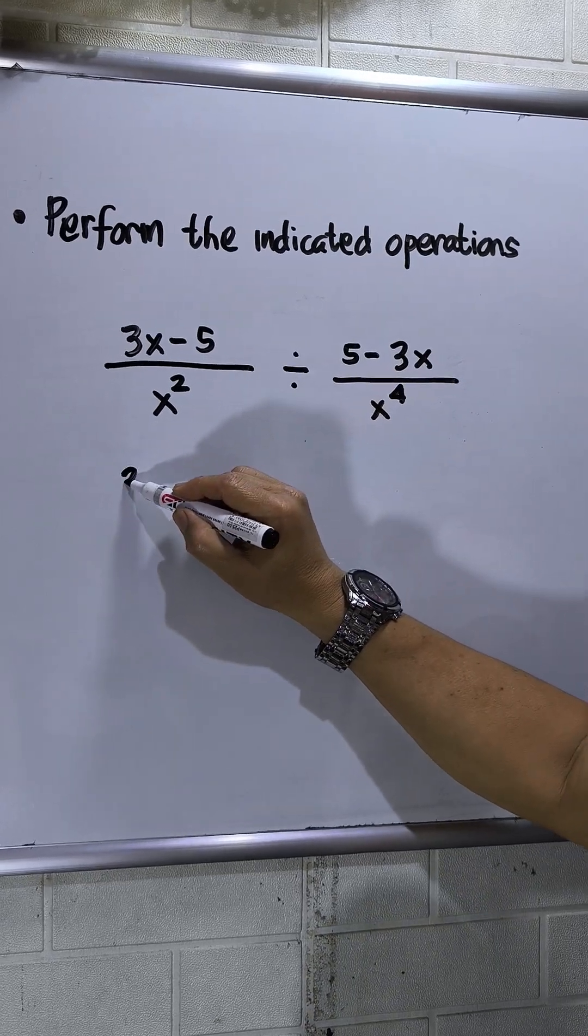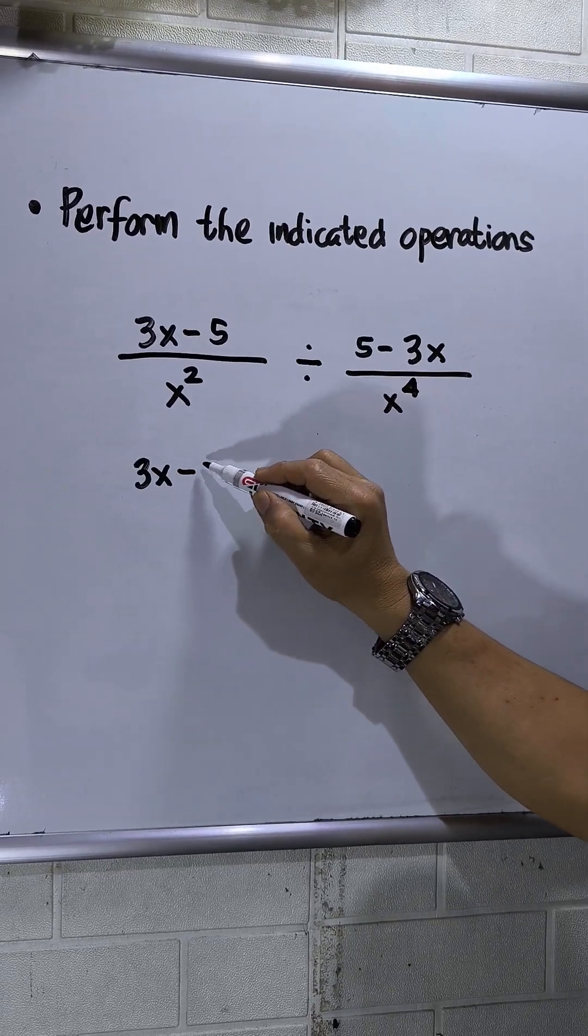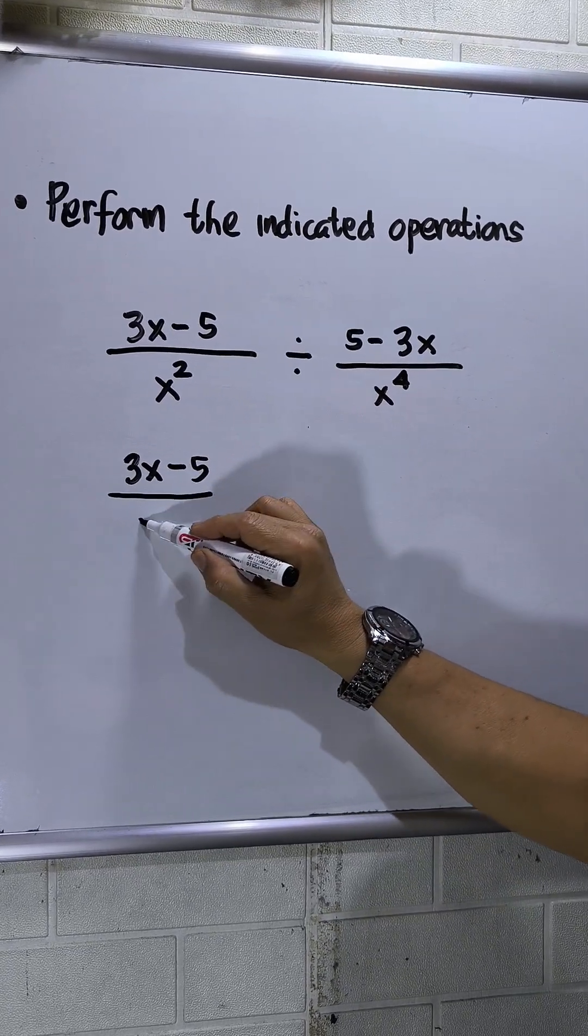So first thing, I have to copy the first fraction, 3x minus 5 over x squared.